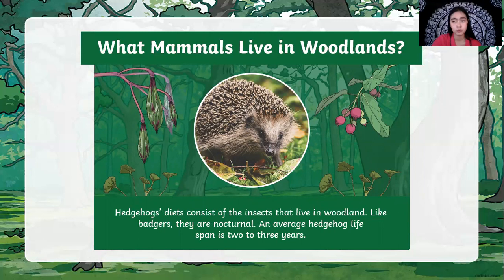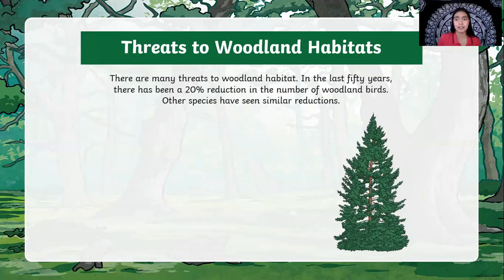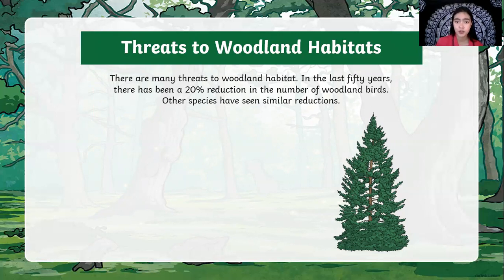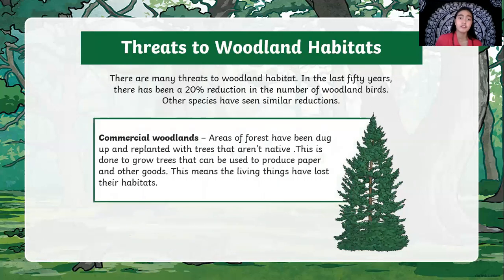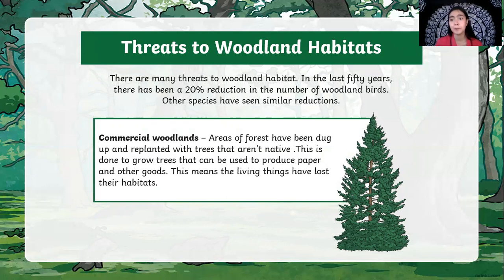An average hedgehog lifespan is two to three years. Not all woodlands are healthy — there are many threats to woodland habitat. In the last 50 years, there has been a 20% reduction in the number of woodland birds. One threat is commercial woodlands, where areas of forest have been dug up and replanted with non-native trees to produce paper and other goods, meaning living things have lost their habitat.